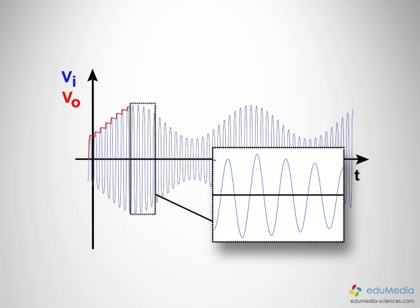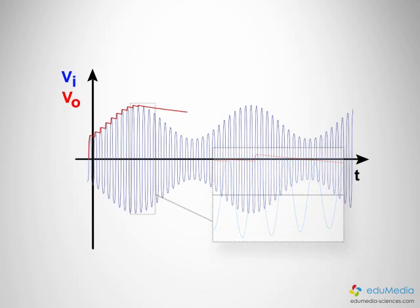If the time constant RC is too large, the capacitor discharges too slowly and the output can momentarily no longer follow the peaks of the blue curve.